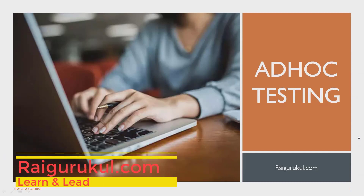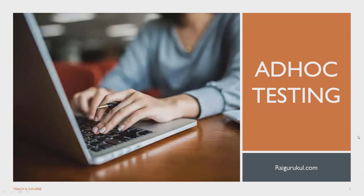Welcome to rigor.com. In this video we'll discuss ad hoc testing. Ad hoc testing is an informal or unstructured software testing type that aims to break the testing process in order to find possible defects or errors at the earliest possible stage. Ad hoc testing is done randomly, so whenever we get a build, the person or team will start testing on a random basis to find defects.